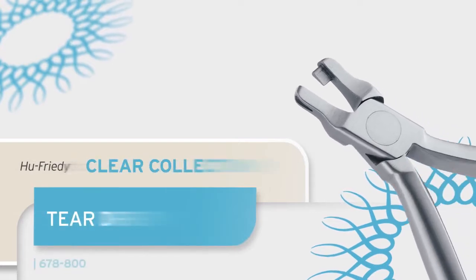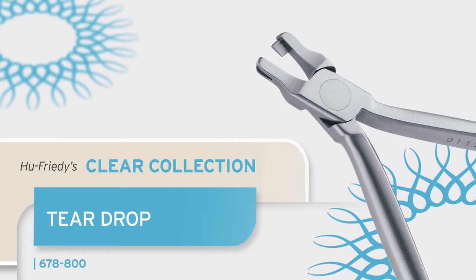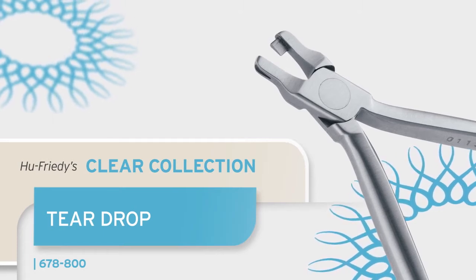This member of the Hu-Friedy Clear Collection is called the Teardrop. It's an instrument created for the express purpose of adding a notch or hook at the gingival margin of Clear Aligners.